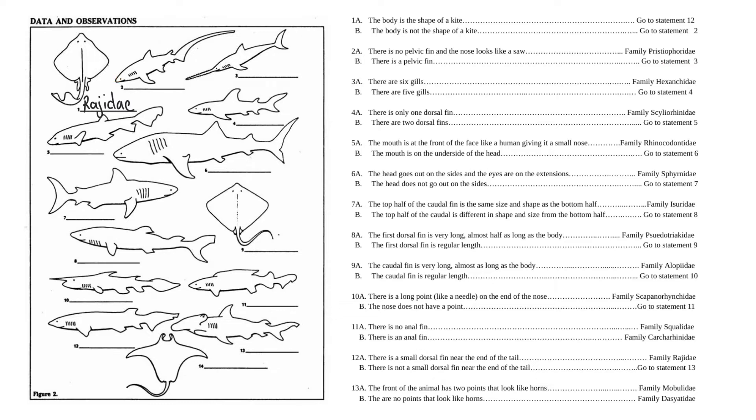There are 6 gills. Let's count. 1, 2, 3, 4, 5 gills. 5 gills means we go to statement 4. There is only 1 dorsal fin. This one has 1, 2 dorsal fins. 2 dorsal fins from statement B means we go to statement 5. The mouth is at the front of the face, kind of like a human giving it a small nose. The mouth is on the underside of the head.